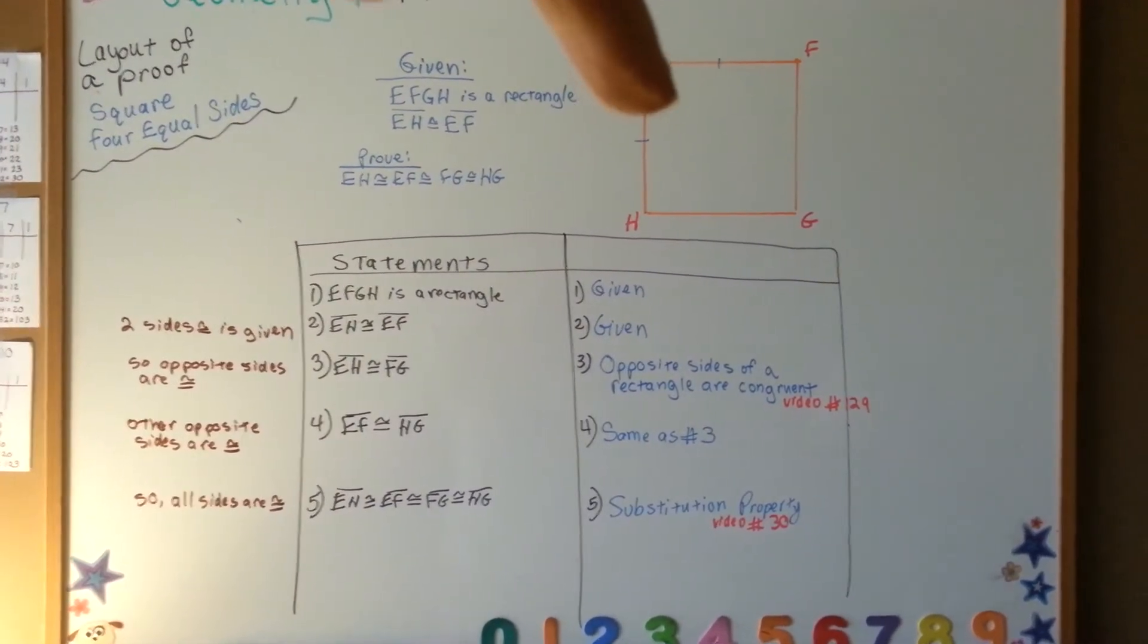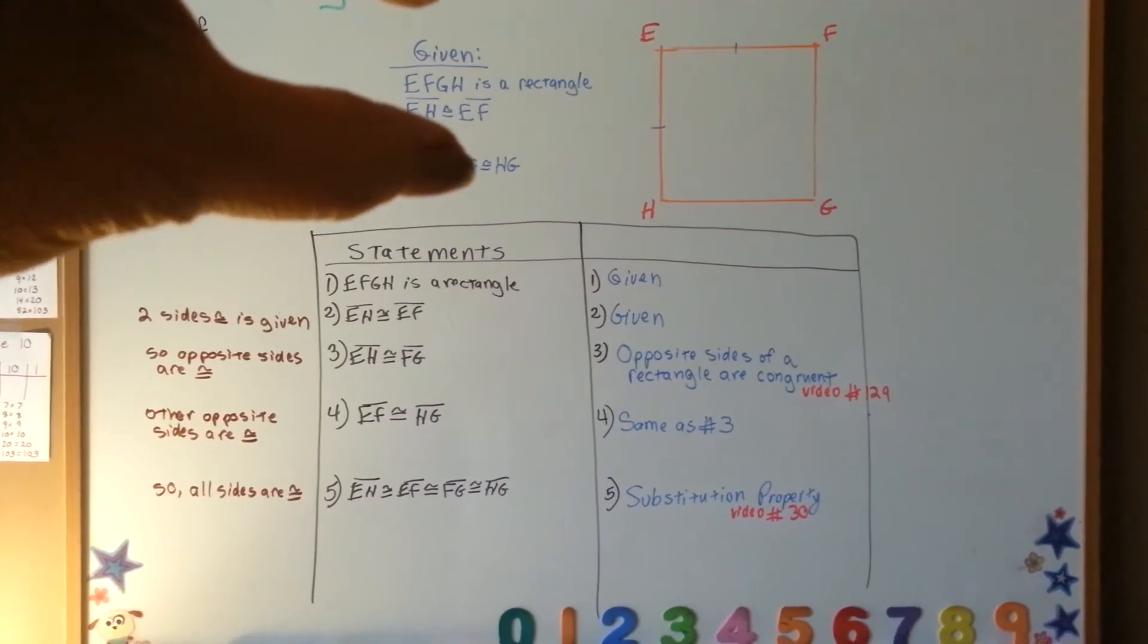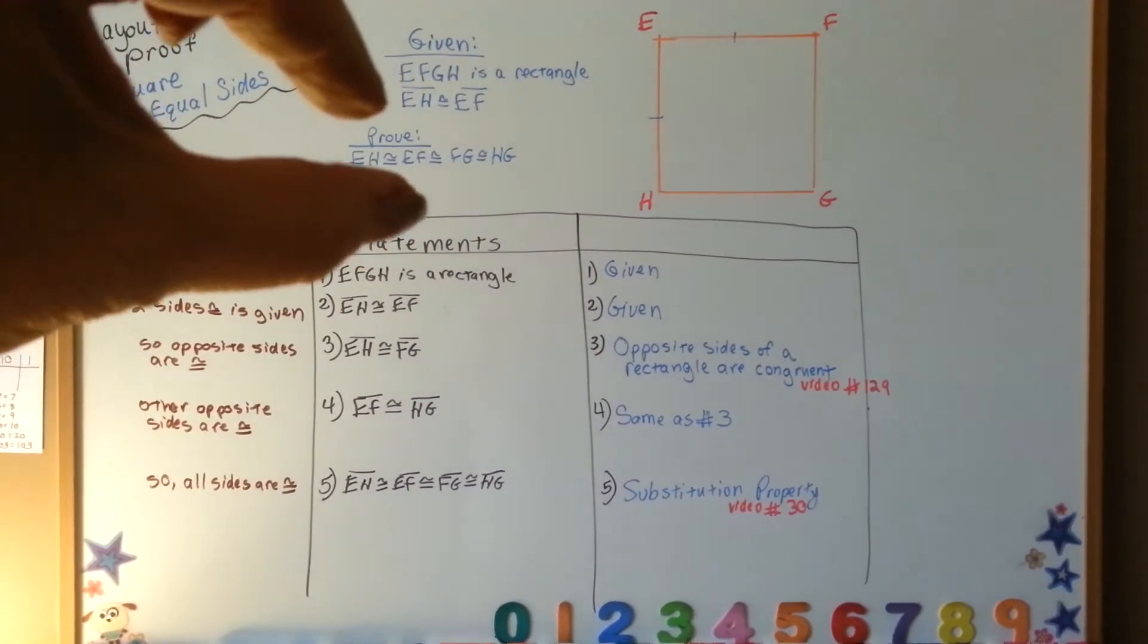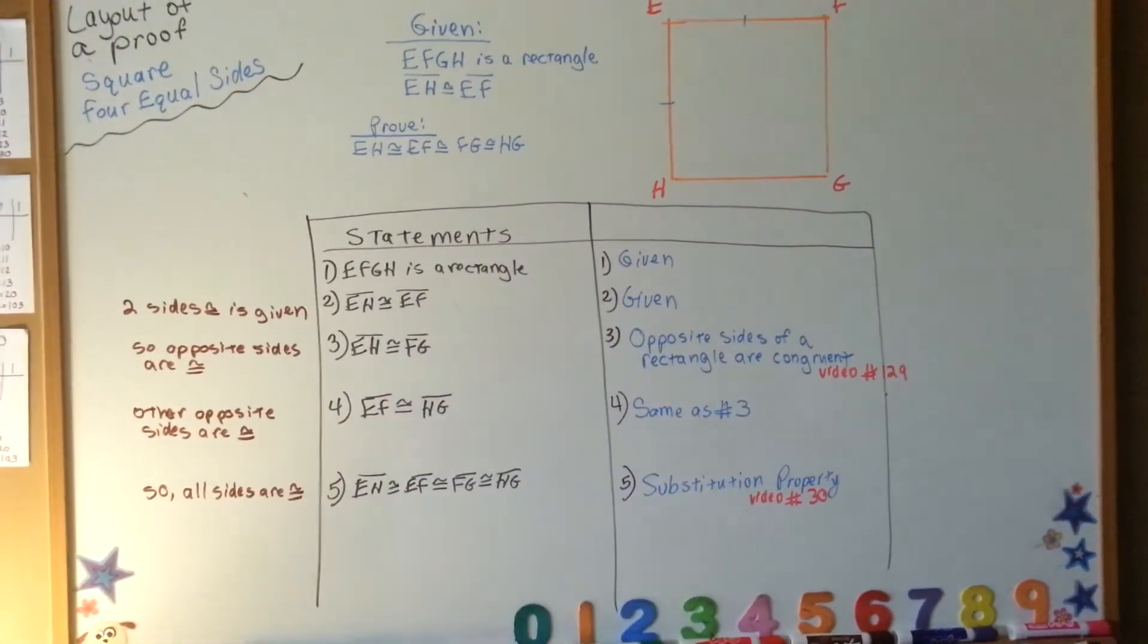And we've got our drawing that we need above the proof table. We've got our given, the thing we're trying to prove, and our statements. And, oops, I forgot to write reasons up there. I will.